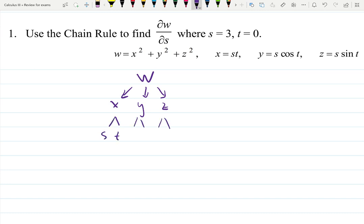So they want us to find the derivative of W with respect to S only. The other one would be the partial derivative with respect to T, but they don't ask us to find that one.